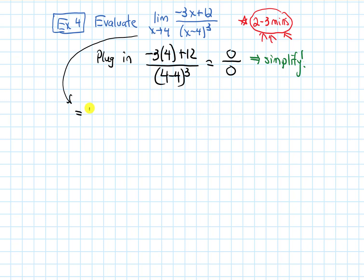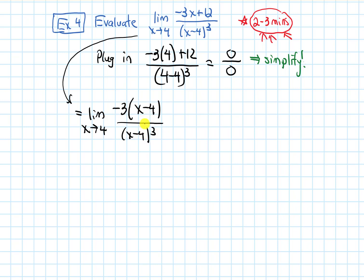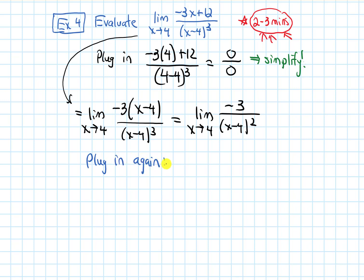Simplifying: we can factor out -3 from the numerator to get -3(x - 4) over (x - 4)³. The (x - 4) cancels, leaving the limit as x approaches 4 of -3/(x - 4)². Now if we try plugging in again, we get -3 on top and 0 on the bottom — a non-zero over zero. We've seen this in Case 2, where the strategy is to take one-sided limits.